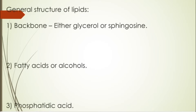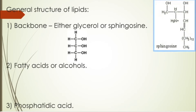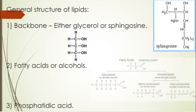Starting with the general structure of lipids, you need to know they have a backbone. It can either be glycerol, which is a 1,2,3-propane triol, or it can be sphingosine, which is found in sphingolipids. This is what it looks like — it is a C18 structure.